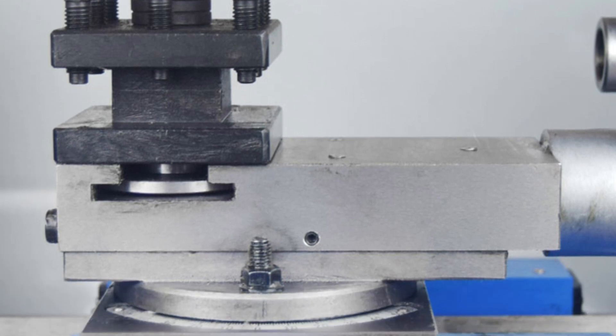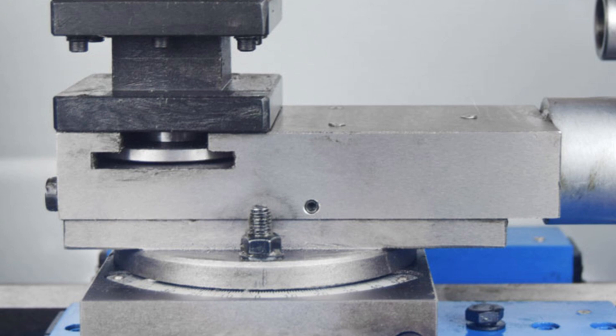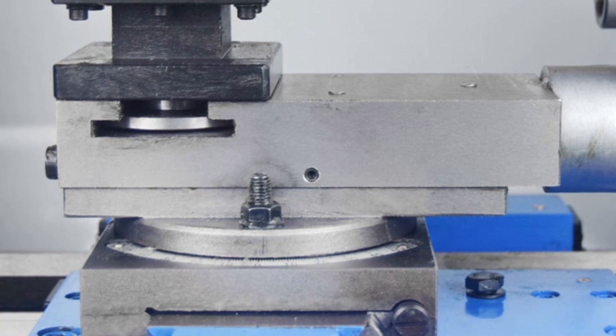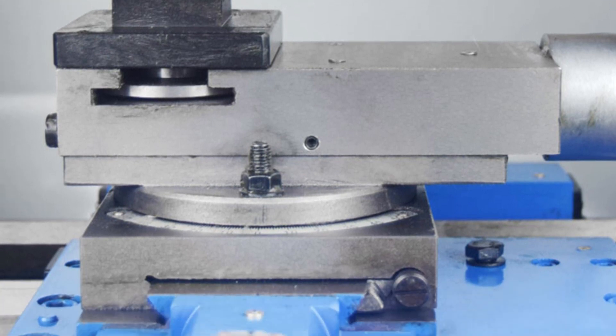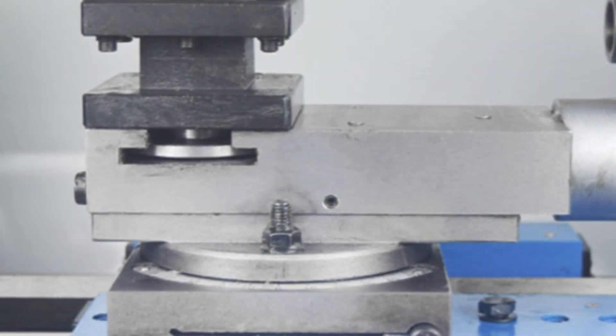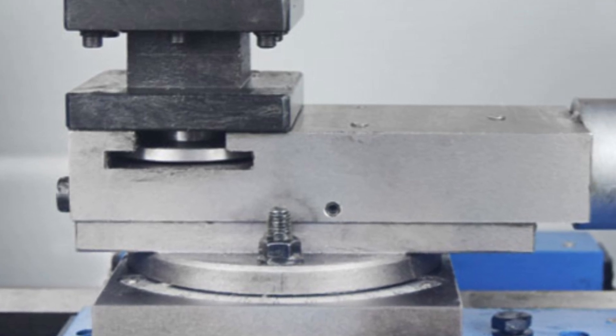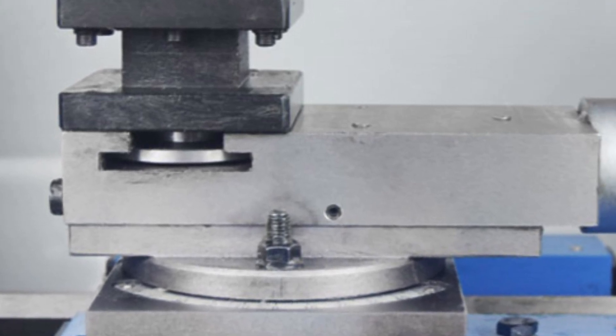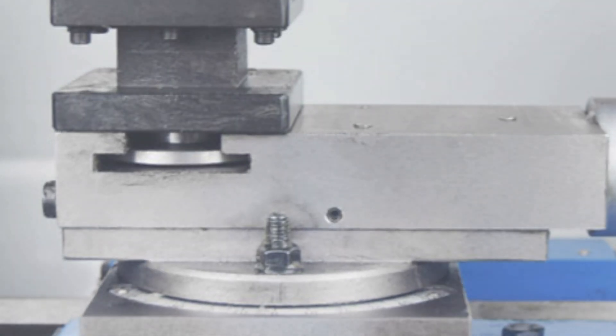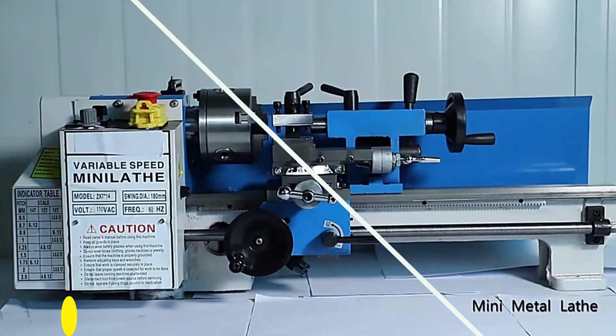The 1.1kW motor, available in 220V and 380V options, provides ample power for handling various materials and cutting requirements. Despite its robust capabilities, the CJM280 Metal Lathe is compact, with a net weight of 260kg, and a package size of 1400 by 680 by 600mm.